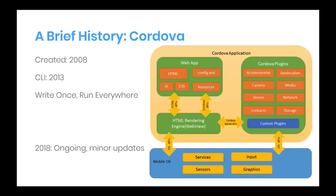Cordova was created in 2008. There was a team of web developers that said to themselves, we really love using our web development skills and we really love the mobile platforms, especially iOS and Android, and we want to extend our skills to build mobile apps with that technology. And they figured it out.